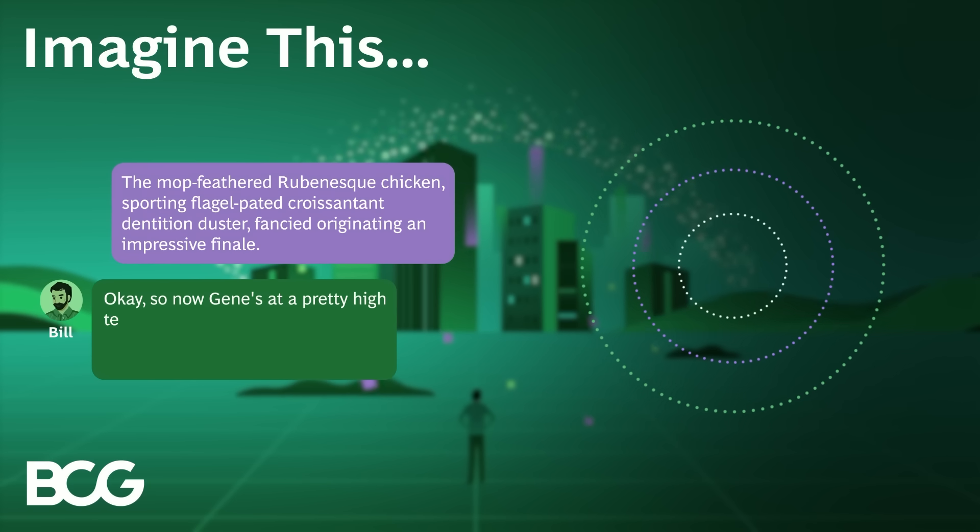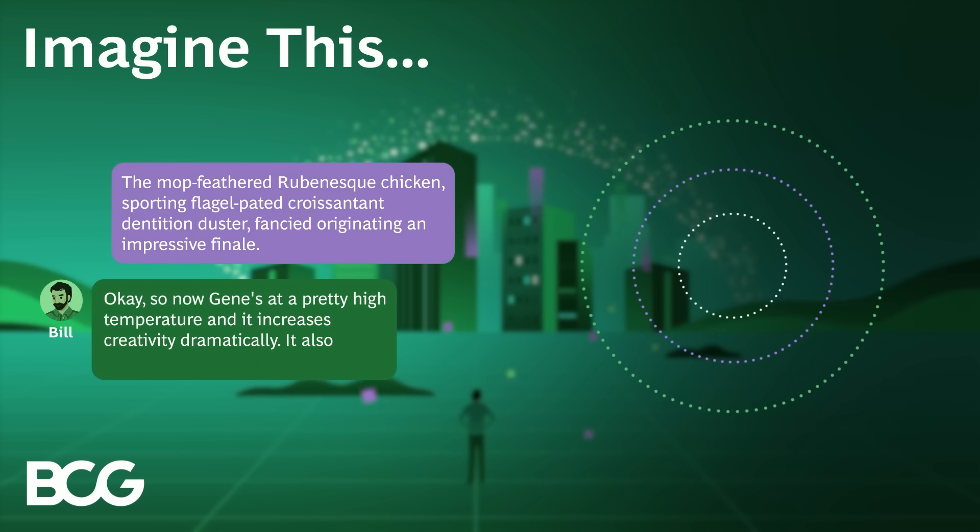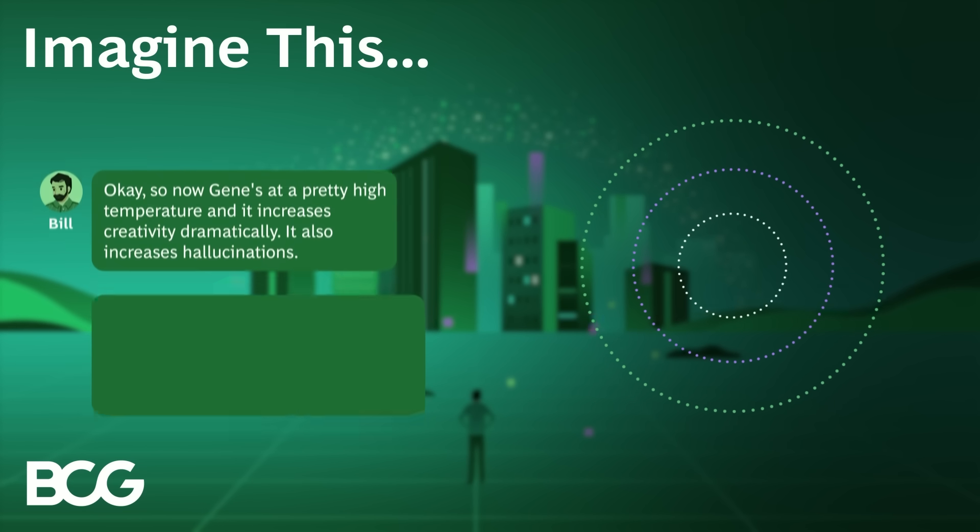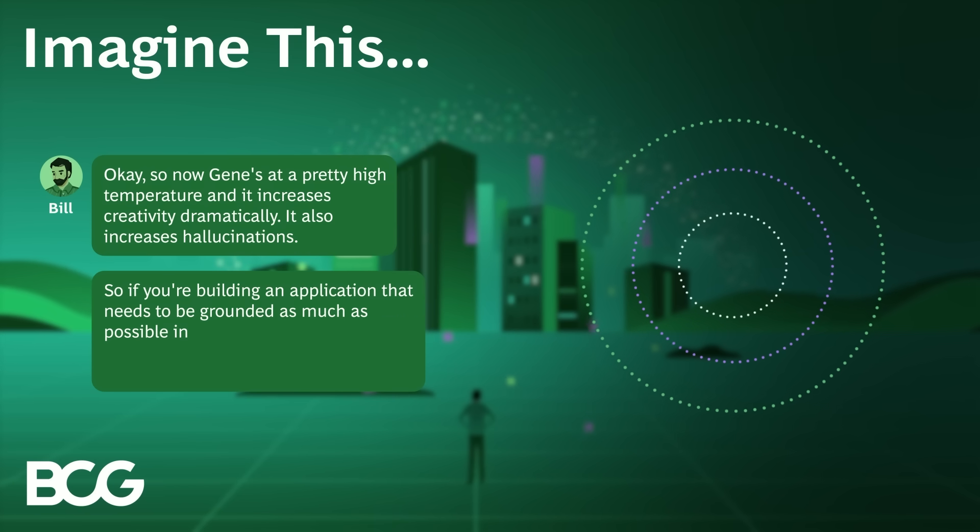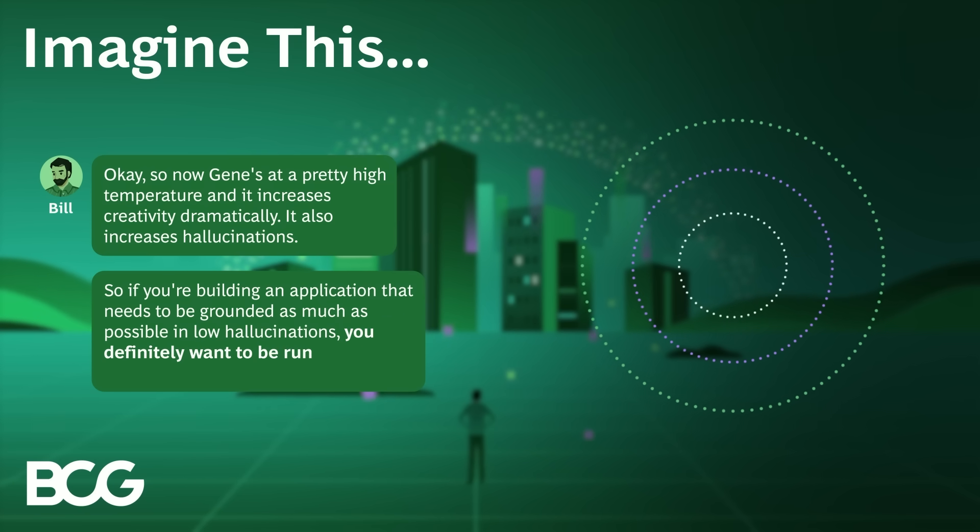Okay, so now Gene's at a pretty high temperature, and it increases creativity dramatically. It also increases hallucinations. So if you're building an application that needs to be grounded as much as possible in low hallucinations, you definitely want to be running a low temperature.